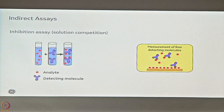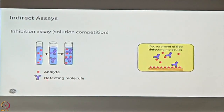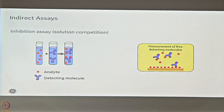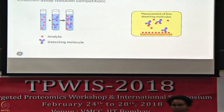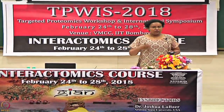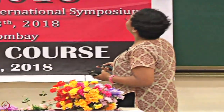There are certain indirect bindings using competition. In solution competition, binding happens in solution rather than on the surface. You mix the analyte and the detecting molecule, keeping analyte constant while increasing the concentration of detecting molecule. With increasing concentration of detecting molecule, you have free detecting molecule in solution. When you put this mixture through, with increasing concentration of analyte you see a drop in response units - it's the reverse of direct binding, where increasing analyte gives increasing RU.